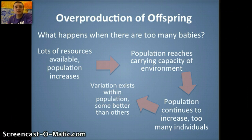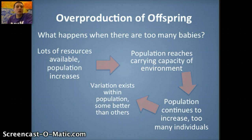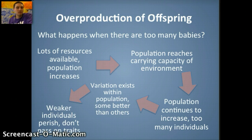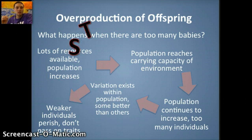For example, rabbits do have different shades of fur color. Maybe one particular fur color helps those rabbits blend in with their environment more than others — maybe a darker color helps them blend in better than a lighter color. Because of that, they're harder for predators to catch and they survive. The weaker individuals — not in terms of physical strength but in terms of their genes being fit for the environment — are not going to survive to pass on their traits.